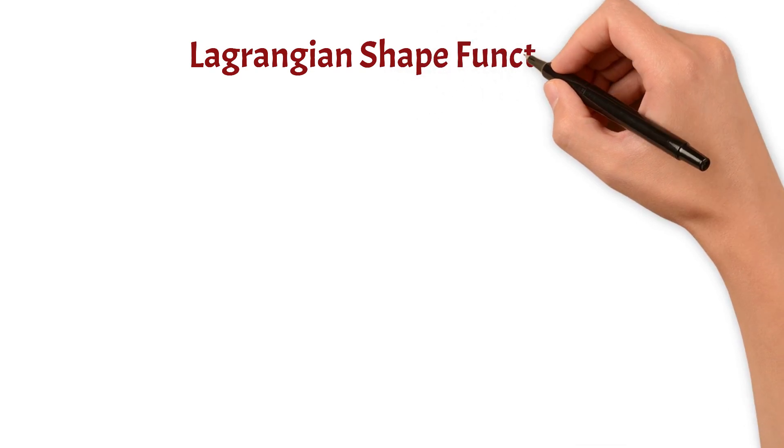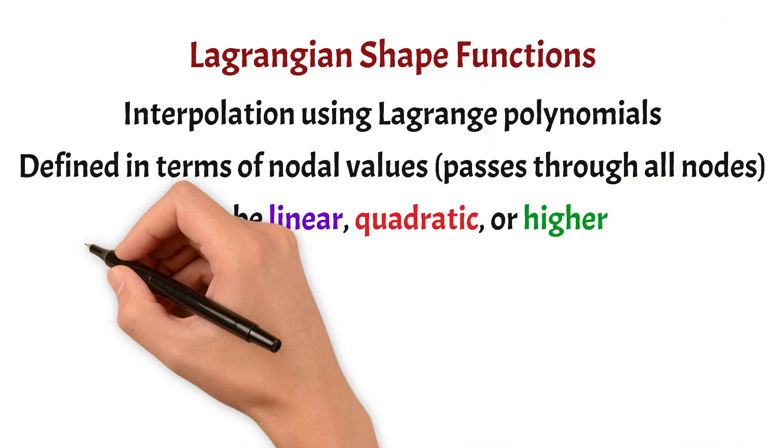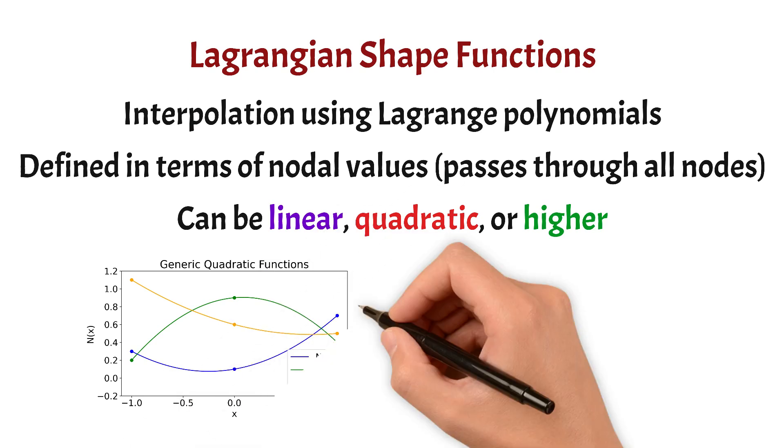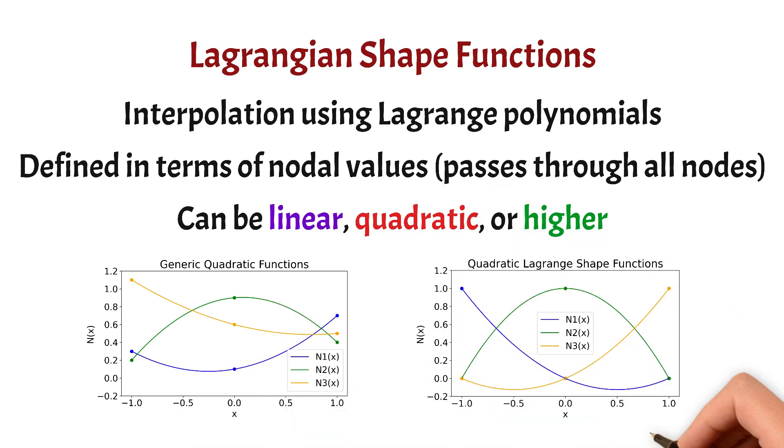Now, let's talk about Lagrangian shape functions. These are a cool concept. These use Lagrangian polynomials for interpolation. That means the shape functions are constructed to pass exactly through all the nodal values. They are defined in terms of nodes and the interpolation is exact at these nodal points.